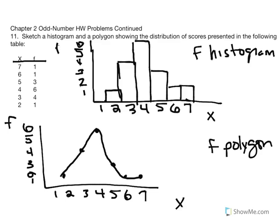What I have here is actually incomplete. All polygons must be brought down to the abscissa. To do so, we consider the value above the highest score — our highest score is 7. To bring it down to the abscissa, we recognize that a score of 8 would have a frequency of 0. So if we carry this over to 8, we properly bring it down to the abscissa on the high end.